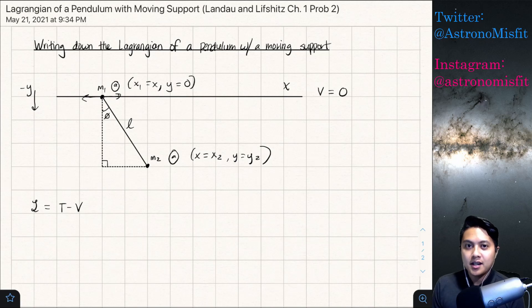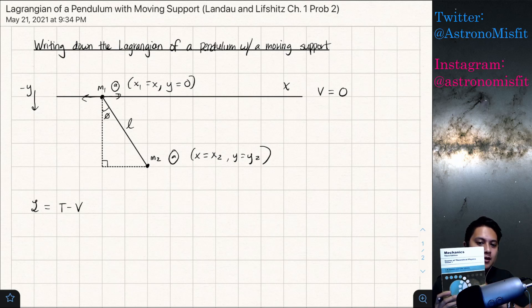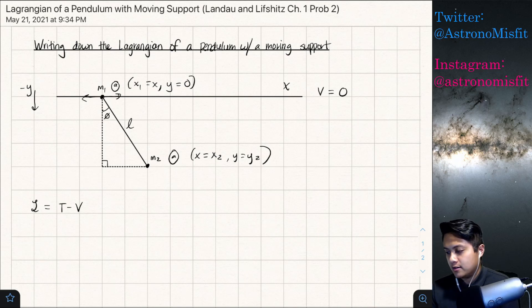Hey there my fellow intellectuals, how are you doing tonight? Kyle here with another video and tonight we are going to look at solving another problem from the course of theoretical physics by Landau-Lifschitz, specifically the mechanics textbook. So mechanics is the first textbook in this course series and I did the first problem in the previous video which was writing down the Lagrangian of a double pendulum and today I'm going to do the second problem in the book which is writing down the Lagrangian of a pendulum that has a moving support.